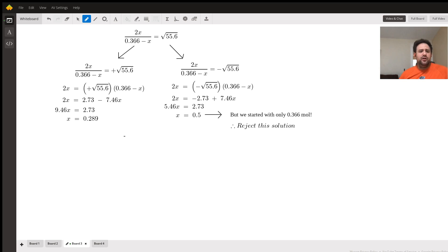We just carry out the simple algebra. As we get to the bottom of the negative situation where we have a negative square root of 55.6, we can see that we get an x that's 0.5. This is a bit of a problem for us because we only started with 0.366 moles, so we can't lose more than what we came with. We can reject that solution - there's no way that's possible, it's a ridiculous, erroneous, or spurious answer.